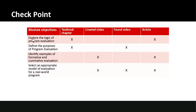Looking at the first module objective — 'explore the logic of program evaluation' — we have more than one instructional material: a textbook chapter and a journal article aligned with it. The second objective is to 'define the purposes of program evaluation.' We're using a textbook chapter and a found video that addresses this, but no journal article because it may not be appropriate. We're not using a created video either — we found an existing one.